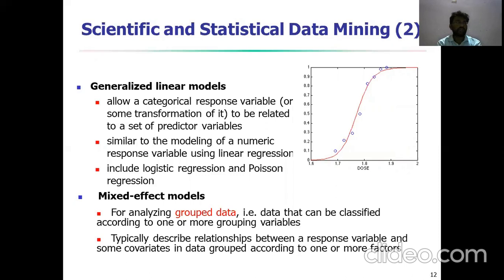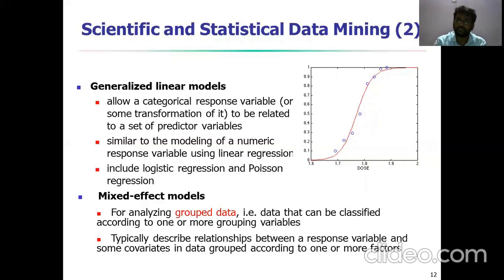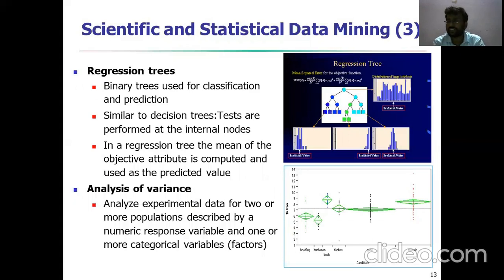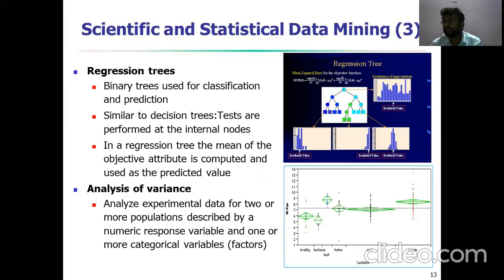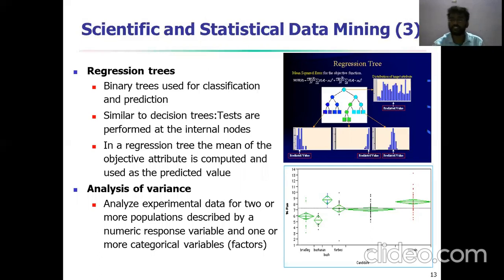In mixed effect models, when analyzing grouped data, the data can be classified according to one or more grouping variables. The relationship between the response variable and covariance is distributed across data grouped by one or more factors. In graphical models, visualized graphs with location markings or geospatial graphs are used to maintain marked positions. For example, regression trees include decision trees and ball graphs, where pirate trees are used for classification and prediction models. In regression, the mean of the objective attribute is computed and used as a predicted value.